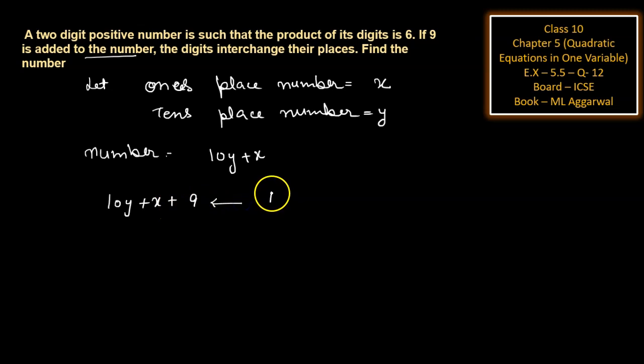The digits interchange their places. That means if 9 is added, then digits are 10x plus y. Now we can write here: 10y plus x plus 9 is equal to 10x plus y.